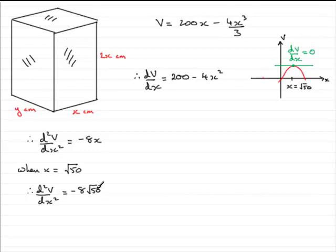You don't need a calculator to do this because all we're interested in is it a positive or negative value. And as you can see, it's negative, it's less than zero. And if this is the case, that means that therefore v is a maximum.